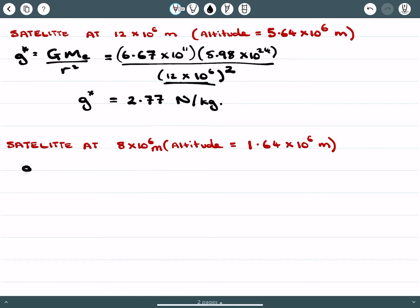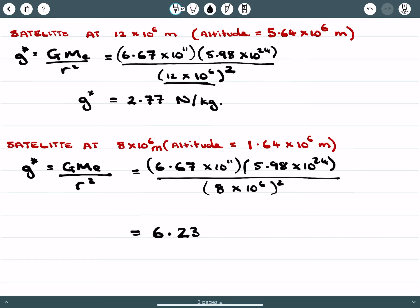We're going to apply the same principle to when we set the satellite at 8 times 10 to the 6 meters from the center of the Earth. And we find here that we're going to carry out our calculations like so. Make sure we keep our constants and our values correct. And as we would expect, our relative gravity is going to increase because it's closer to the Earth. And we get 6.23 newtons per kilogram.